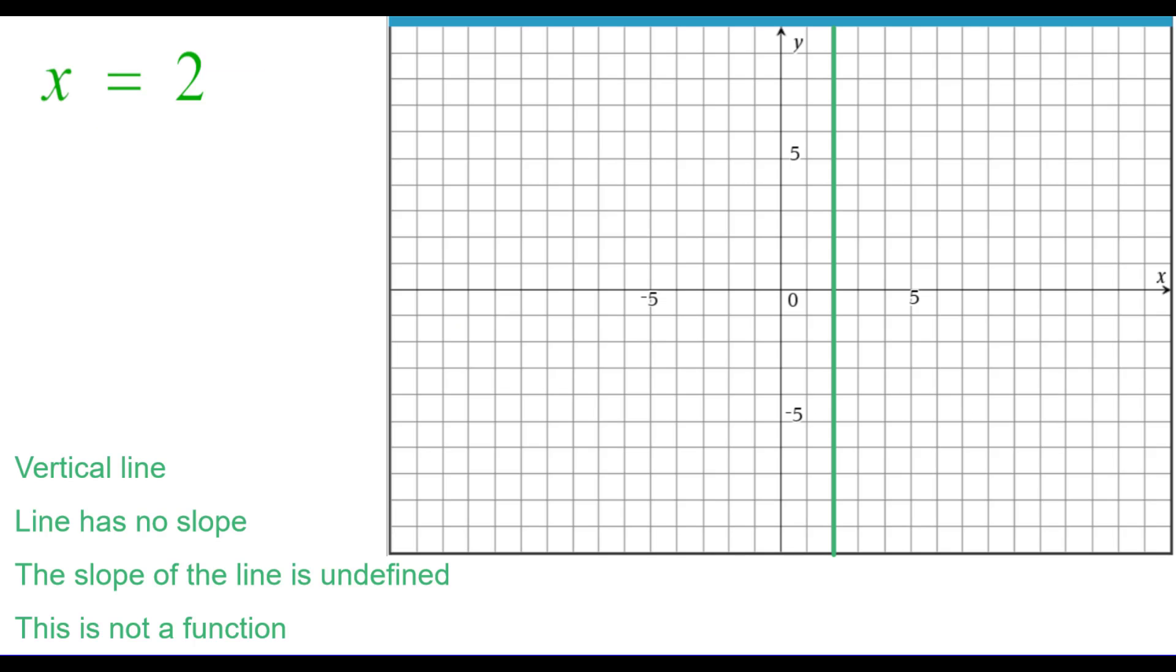Now we'd ask you to try one. Graph x equals 2. Press pause to do this and then resume when you're finished to check. So here we have a vertical line, x equals 2 through 2 comma 0. It is vertical, has no slope or the slope of the line is undefined and this is not a function.